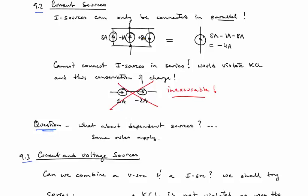So here we have a 5 and a minus 1 and then an 8 amp source. The 8 amp source is oriented in a downward direction. And so the net current source that is pointing upwards is going to be the 5 amps plus the minus 1 amp, and then minus 8 amps for a net of minus 4 amps pointing up.